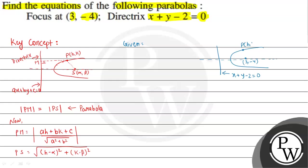From point P with coordinates (h, k), drop a perpendicular to the directrix meeting at point M. Then setting PM equal to PS: PM equals (h plus k minus 2) divided by square root of 1 squared plus 1 squared, and PS equals square root of (h minus 3) squared plus (k minus (-4)) squared, which is (k plus 4) squared.